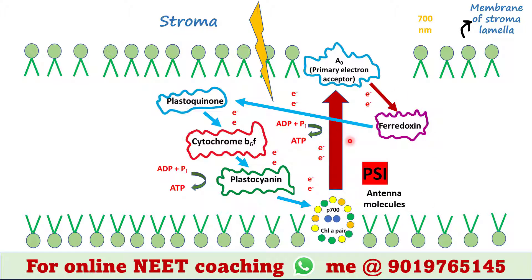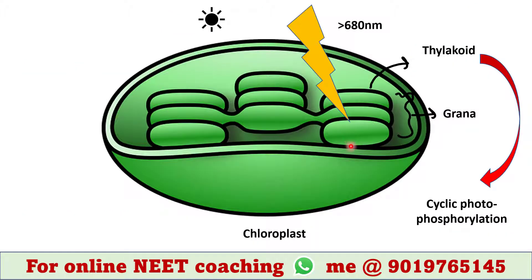The phosphorylation occurs due to the cyclic flow of electrons, hence it is called cyclic photophosphorylation. Cyclic photophosphorylation results in the synthesis of two ATP but no NADPH, whereas non-cyclic photophosphorylation results in the synthesis of one ATP and also NADPH. Sometimes cyclic photophosphorylation also occurs in the thylakoid membrane when only light of wavelengths beyond 680 nanometers is available and PS2 cannot be activated.